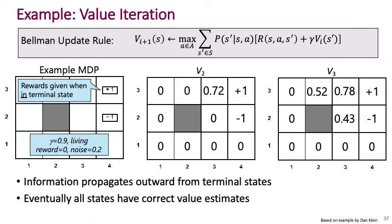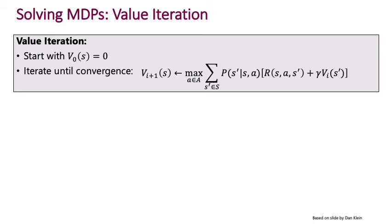So here is value iteration once more: you start with values of all states set to zero, then keep iterating using the Bellman equation as an update rule, and eventually arrive at the true optimal value function. It can be proven that value iteration does indeed converge to the optimal value function.